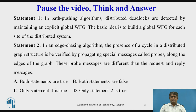Pause the video, think and answer. Statement 1: In a path pushing algorithm, distributed deadlocks are detected by maintaining an explicit global wait-for graph. The basic idea is to build a global wait-for graph at each site of the distributed system. Statement 2: In an edge chasing algorithm, the presence of a cycle in a distributed graph structure is verified by propagating special messages called probes along the edges of the graph. These probe messages are different from the request and reply messages. The answer is A — both statements are true.